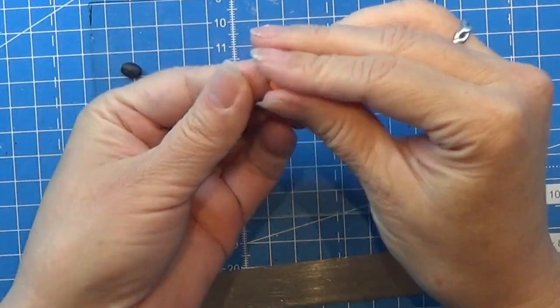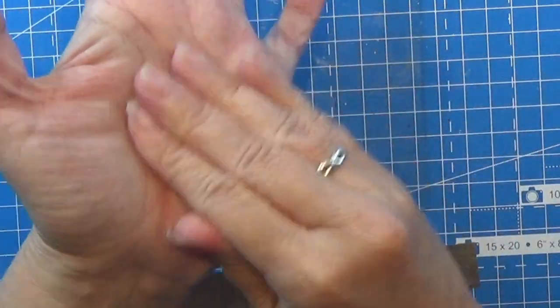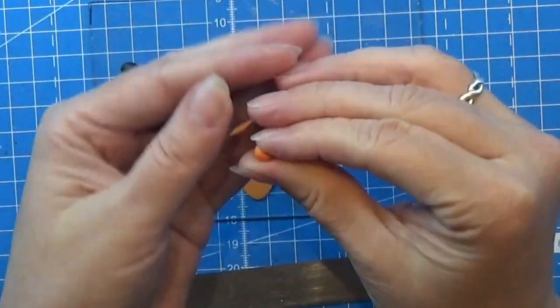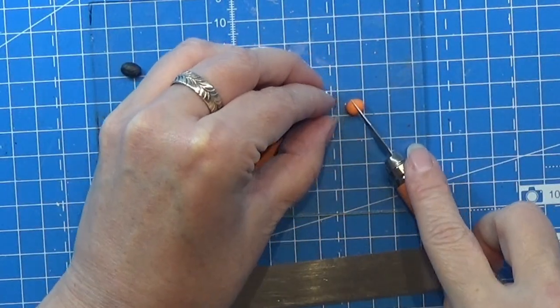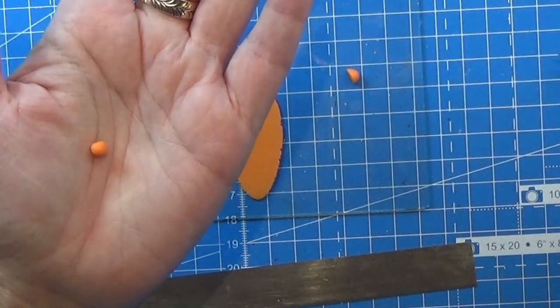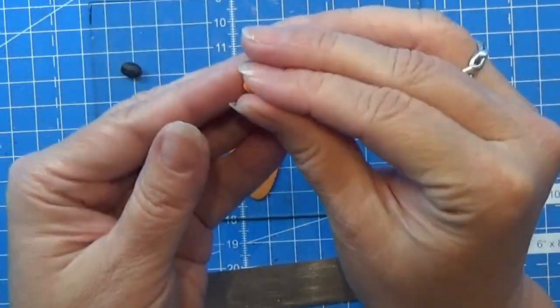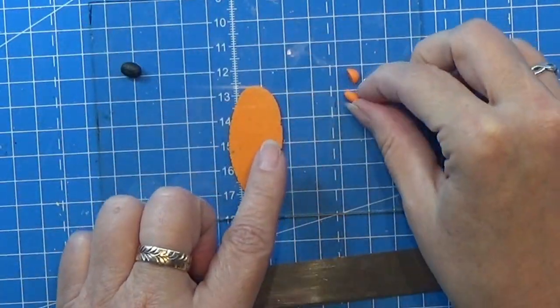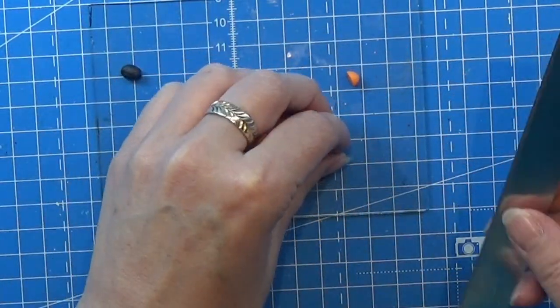So here we are by the table and I rolled out some orange clay in the thinnest setting on my pasta machine. I took a tiny piece of orange clay, first I rolled it into a ball and then I am going to make an edge on one end so it's kind of a teardrop shape.